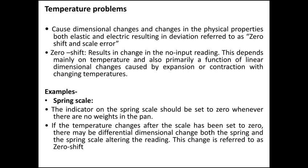Some temperature problems are also associated with this. Temperature causes dimensional changes and changes in the physical properties — both elastic and electric — resulting in deviations referred to as zero shift or scale error. Due to high temperature problems, there will be thermal expansion causing elastic problems, and some zero shift or scale error will be caused due to thermal variation. Zero shift results in a change in the no-input reading. Whenever an input signal is to be processed, due to zero shift we are not able to get the input quantity measured correctly. This zero shift mainly depends upon temperature and is primarily a function of linear dimension changes caused by expansion or contraction with changing temperatures.